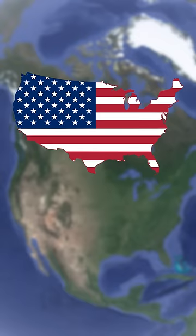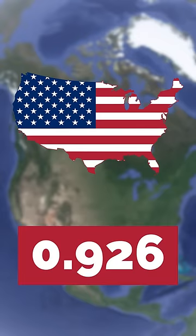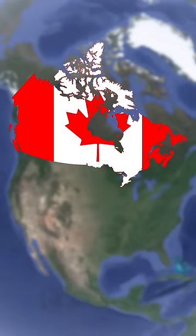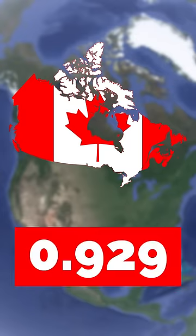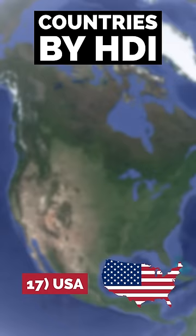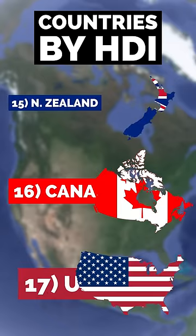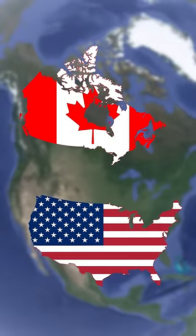The United States has an HDI of 0.926 while Canada has a slightly higher HDI of 0.929. This means that Canada is the 16th most developed country in the world while the U.S. sits right behind it in 17th place. So what country comparison do you want to see next?